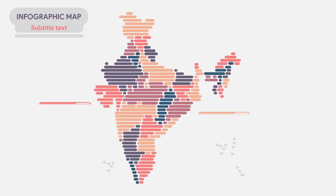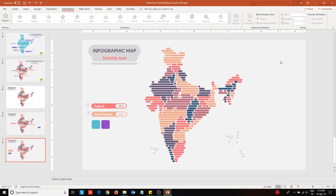Enter into slideshow mode to view the final animated map. In the second part of this video, I will be creating a bi-color map with a different animation. I will be using the previous map to create this.